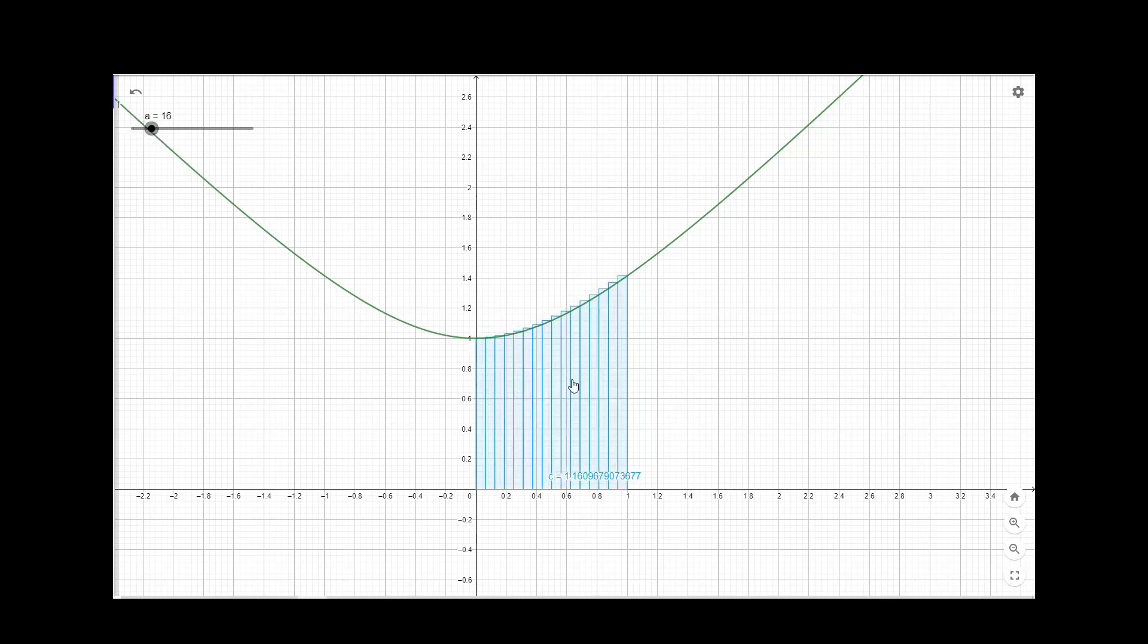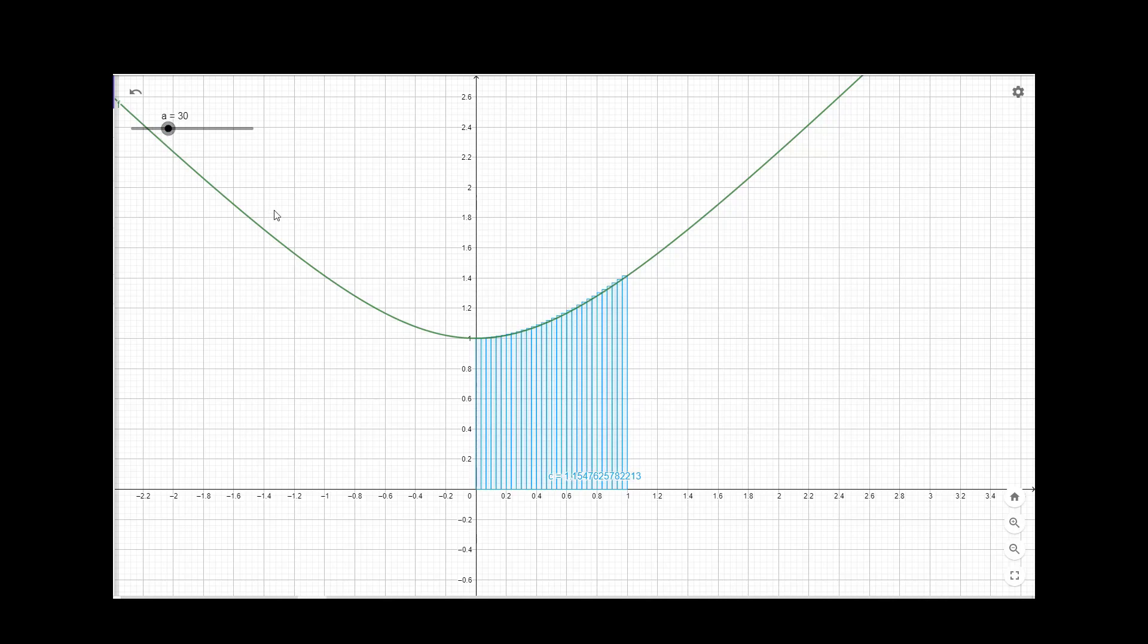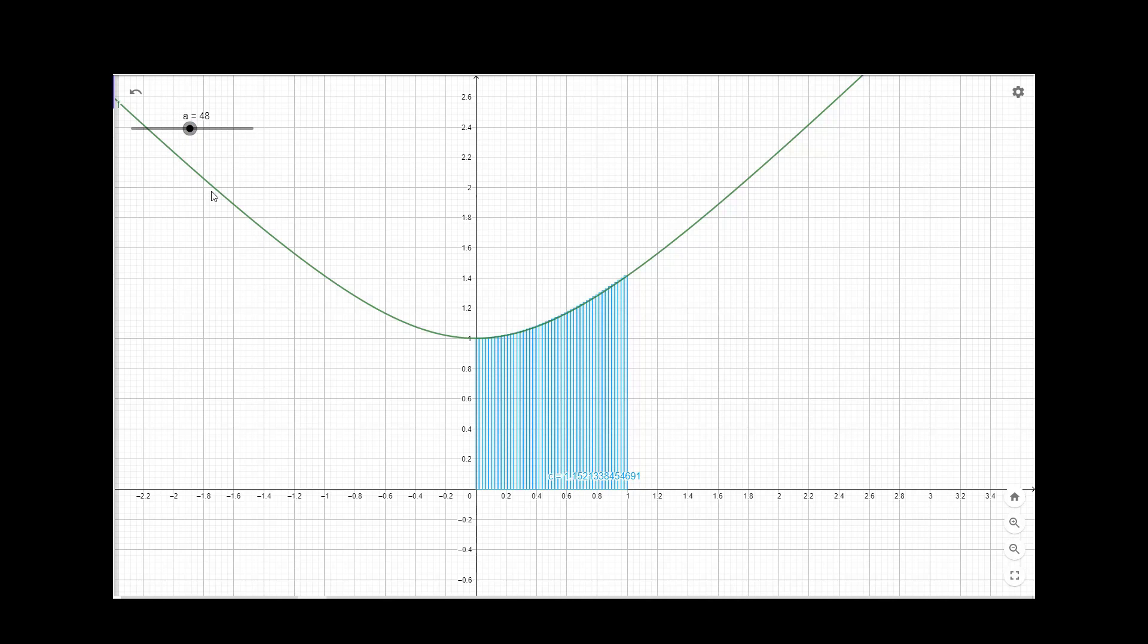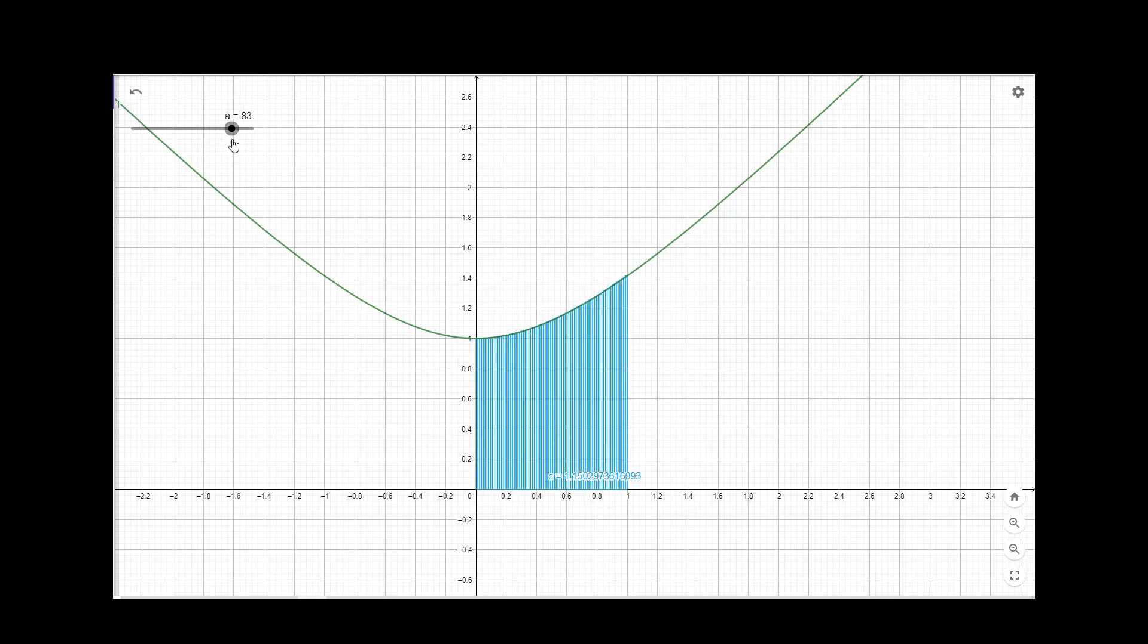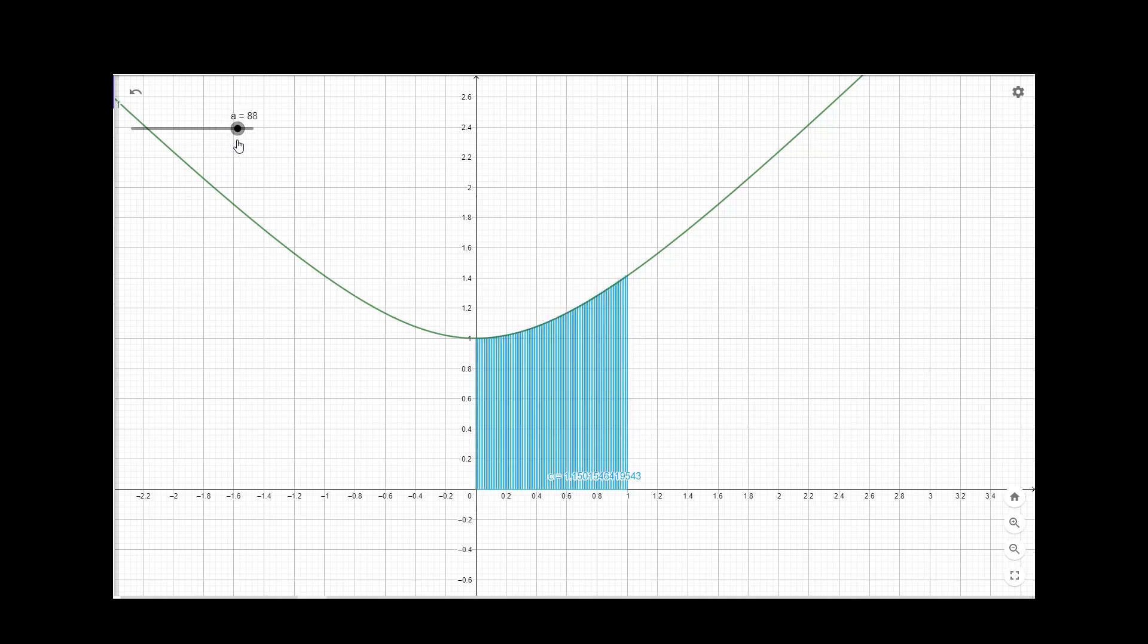For a=16, it comes to 1.16. a=30 gives 1.15. So we are coming closer and closer to the actual value. At a=88, it is giving 1.1501.